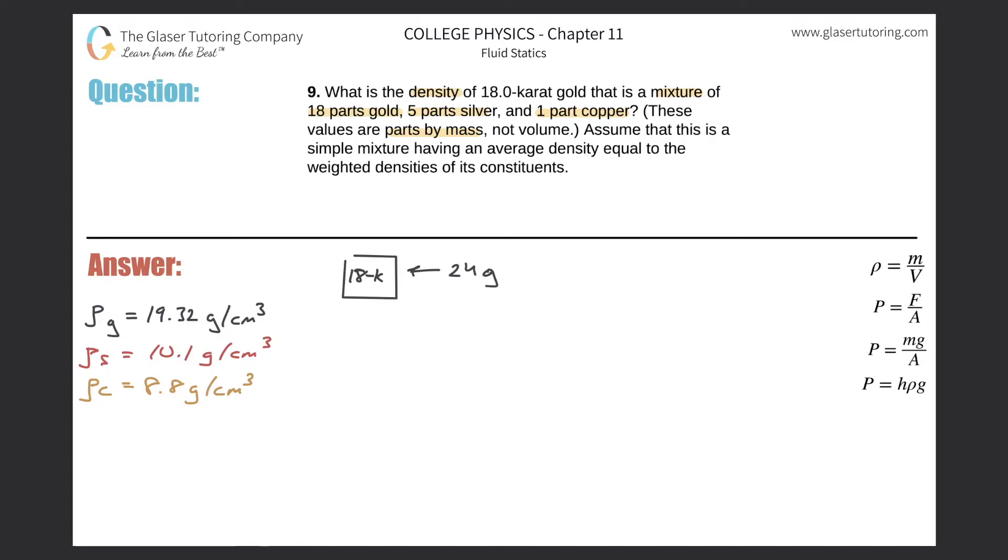Well, two reasons. I chose the grams because all of my densities are in grams. I chose the number 24 because they told me the parts of each, meaning it's one part gold, five parts silver, and one part copper.